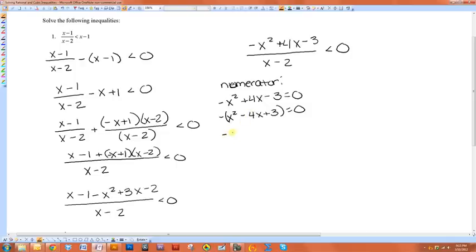So I'm looking for two numbers that multiply to give me three and add to give me negative four. So that would be negative three and negative one. So that means x minus three equals zero or x minus one equals zero. So that means x equals three or x equals one.